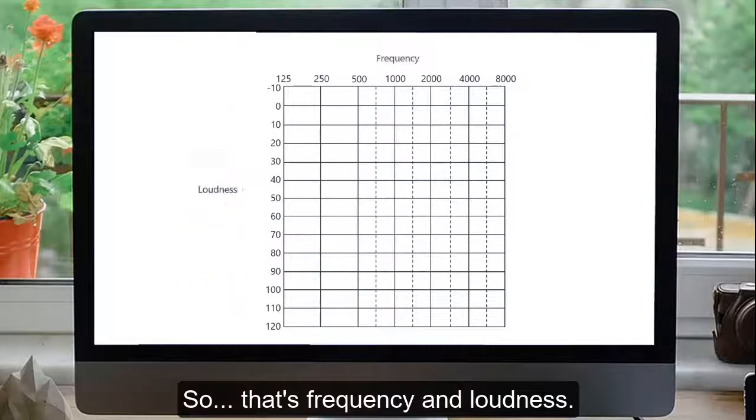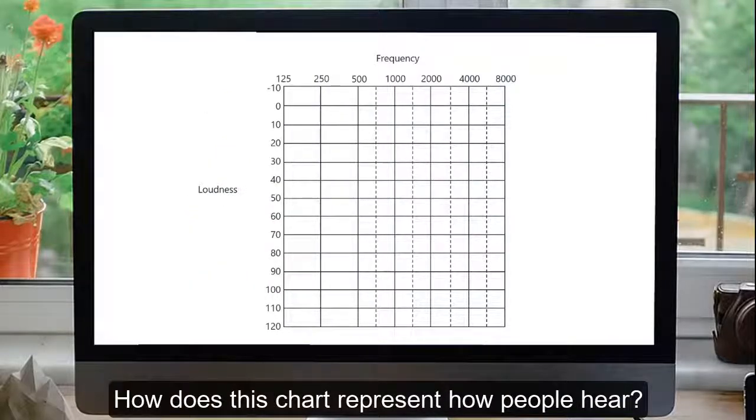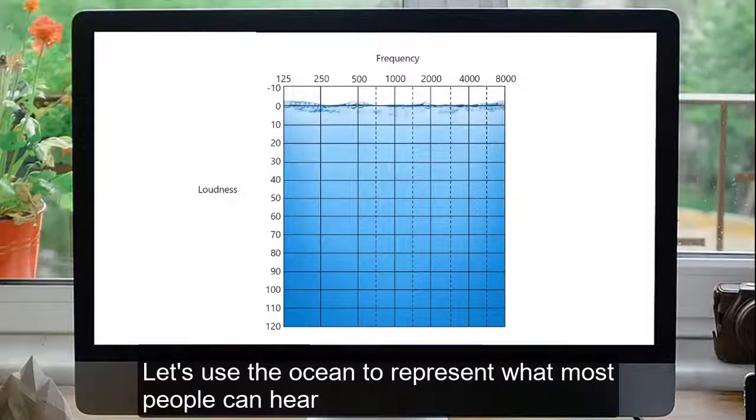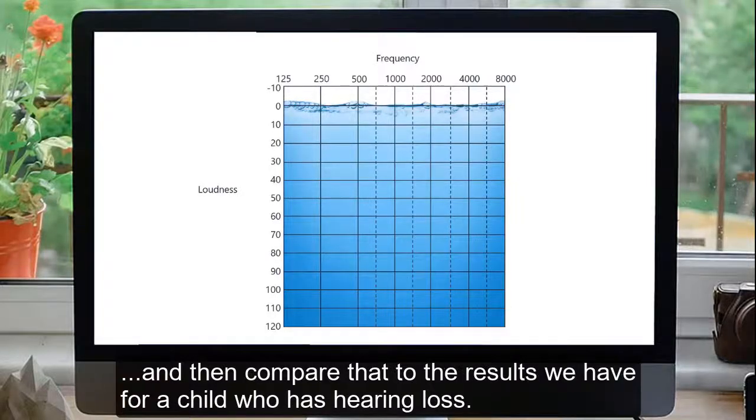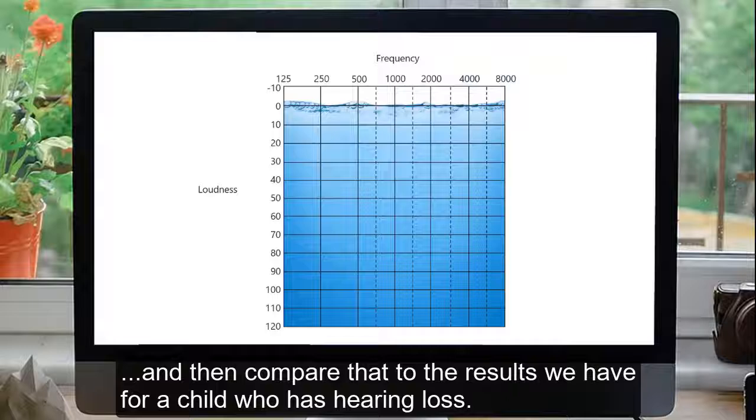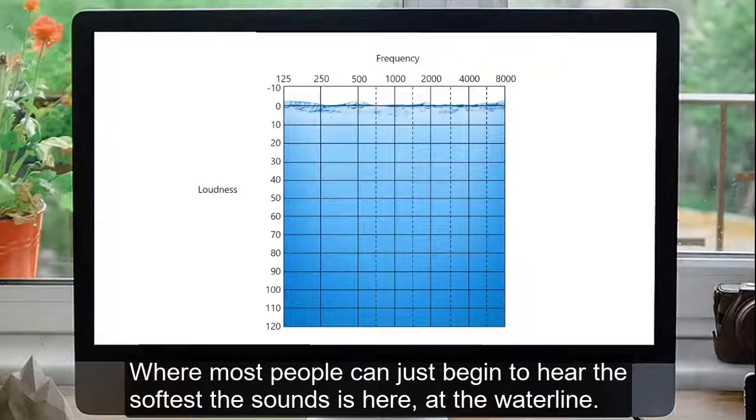So that's frequency and loudness. How does this chart represent how people hear? Let's use the ocean to represent what most people can hear, and then compare that to the results we have for a child who has hearing loss.